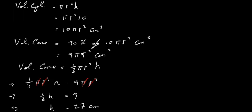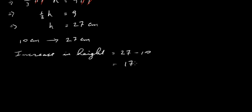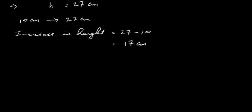We're going from 10 up to 27. So the increase in height is equal to 27 minus 10, which is 17 centimeters. How do you work out the percentage increase then? Well, the percentage increase,